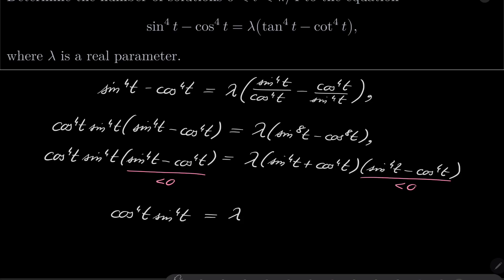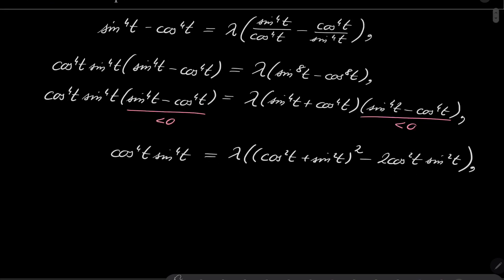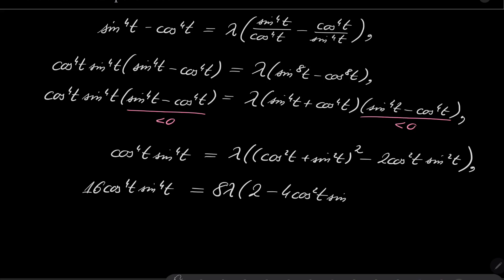After dividing, we have sin⁴(t)cos⁴(t) on the left equals λ times (sin⁴(t) + cos⁴(t)) on the right. We write sin⁴(t) + cos⁴(t) as (cos²(t) + sin²(t))² − 2cos²(t)sin²(t) = 1 − 2cos²(t)sin²(t). Now multiply both sides by 16: 16cos⁴(t)sin⁴(t) = 8λ(2 − 4cos²(t)sin²(t)).